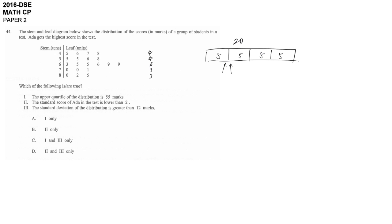Q1 is between the fifth data and the sixth data. So Q1 is equal to 55 plus 55 divided by 2. That means 55.